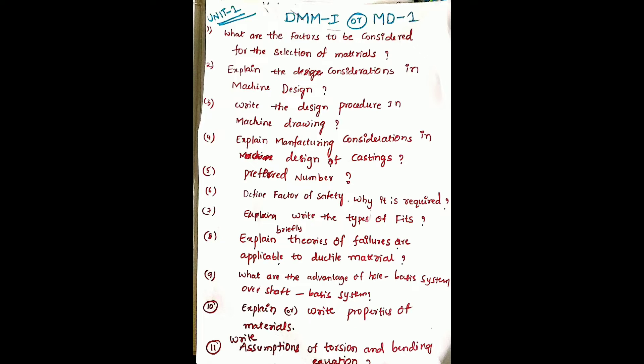Seventh question: write the types of fits. Eighth question: explain briefly the theories of failures applicable to ductile materials. Ninth question: what are the advantages of the hole basis system over the shaft basis system? Tenth question: explain the properties of materials. Eleventh question: write the assumptions of the torsion and bending equation.